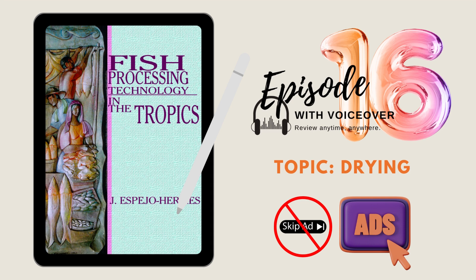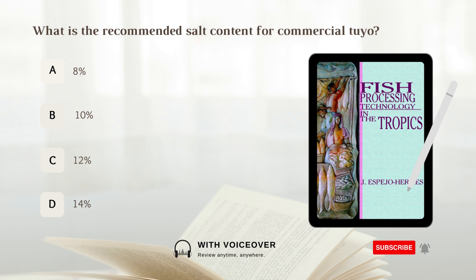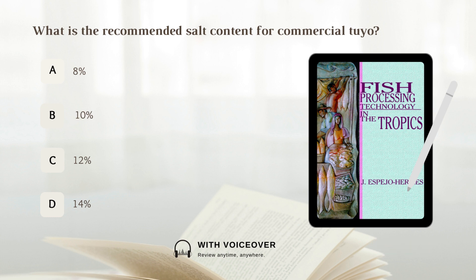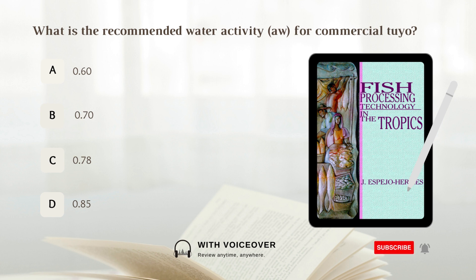Episode 16 topic: drying. Questions and answers are based on the book Fish Processing Technology in the Tropics. What is the recommended salt content for commercial tuyo? The answer is C, 12%. What is the recommended water activity for commercial tuyo? The answer is C, 0.78.